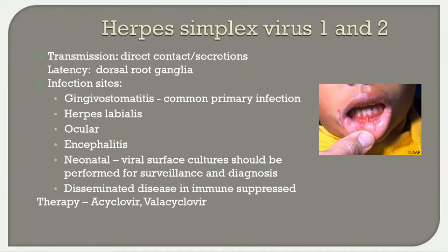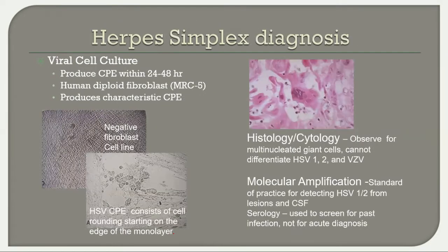HSV 1 and 2 transmission is by direct contact and secretions; latency is in the dorsal root ganglia. The most common primary infection site is gingivostomatitis. Other sites include herpes labialis, ocular, encephalitis, and neonatal infection. In neonatal infections, babies may not have active lesions at birth, so viral surface culture is performed at the time of delivery — swabbing the baby over several sites for viral culture or PCR. Disseminated disease can occur in the immune-suppressed host. Specific therapy includes acyclovir and valacyclovir.